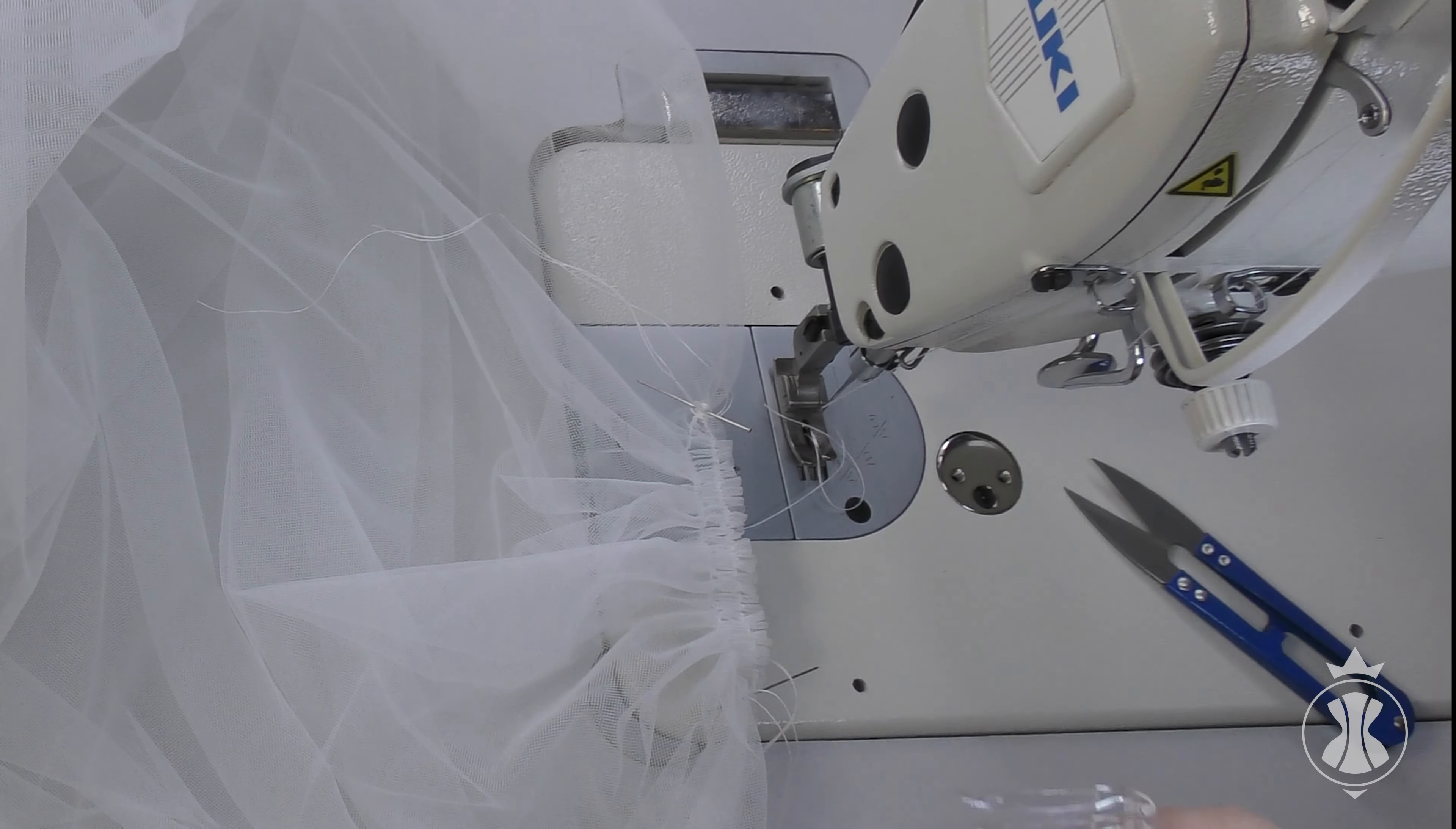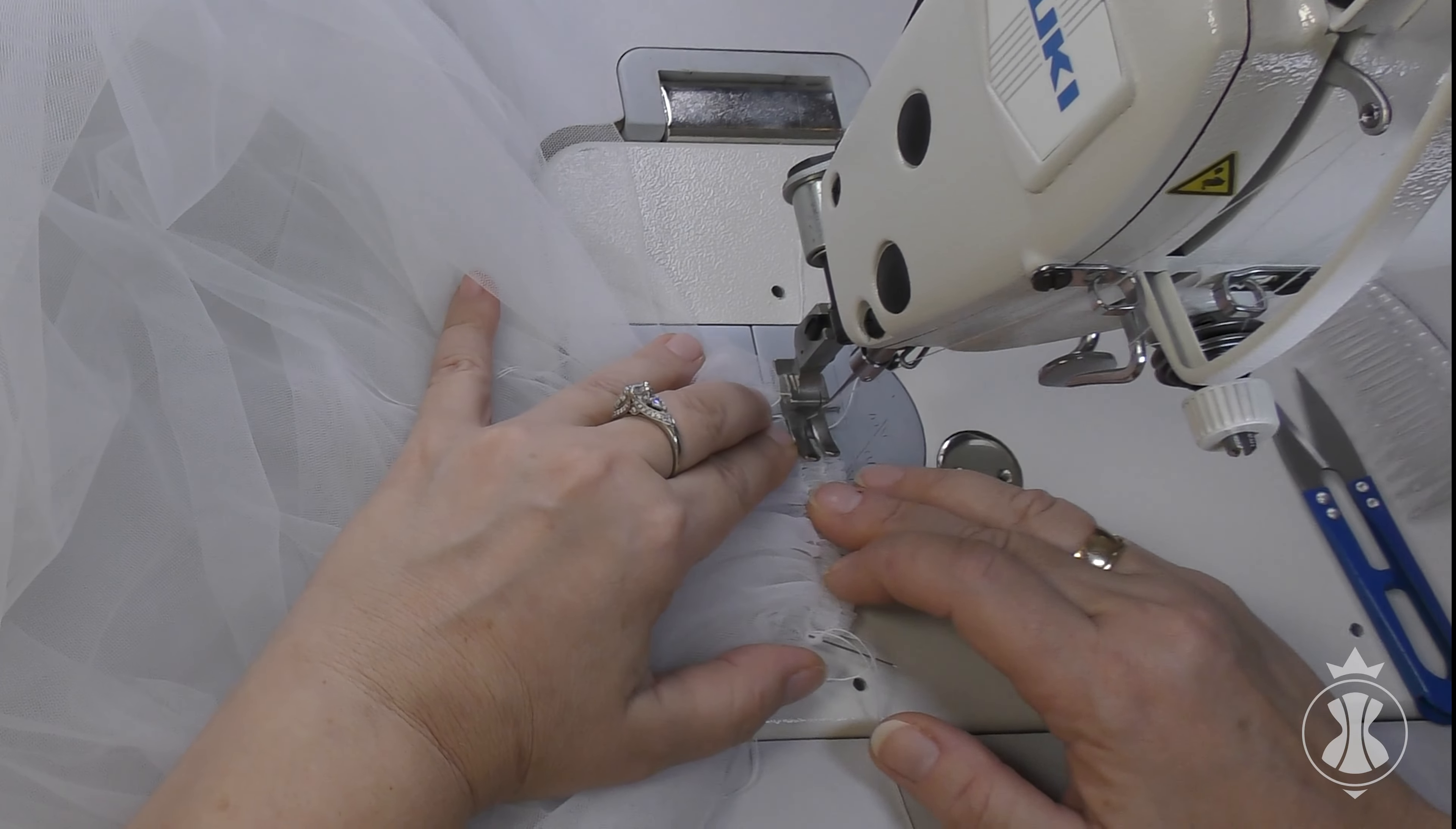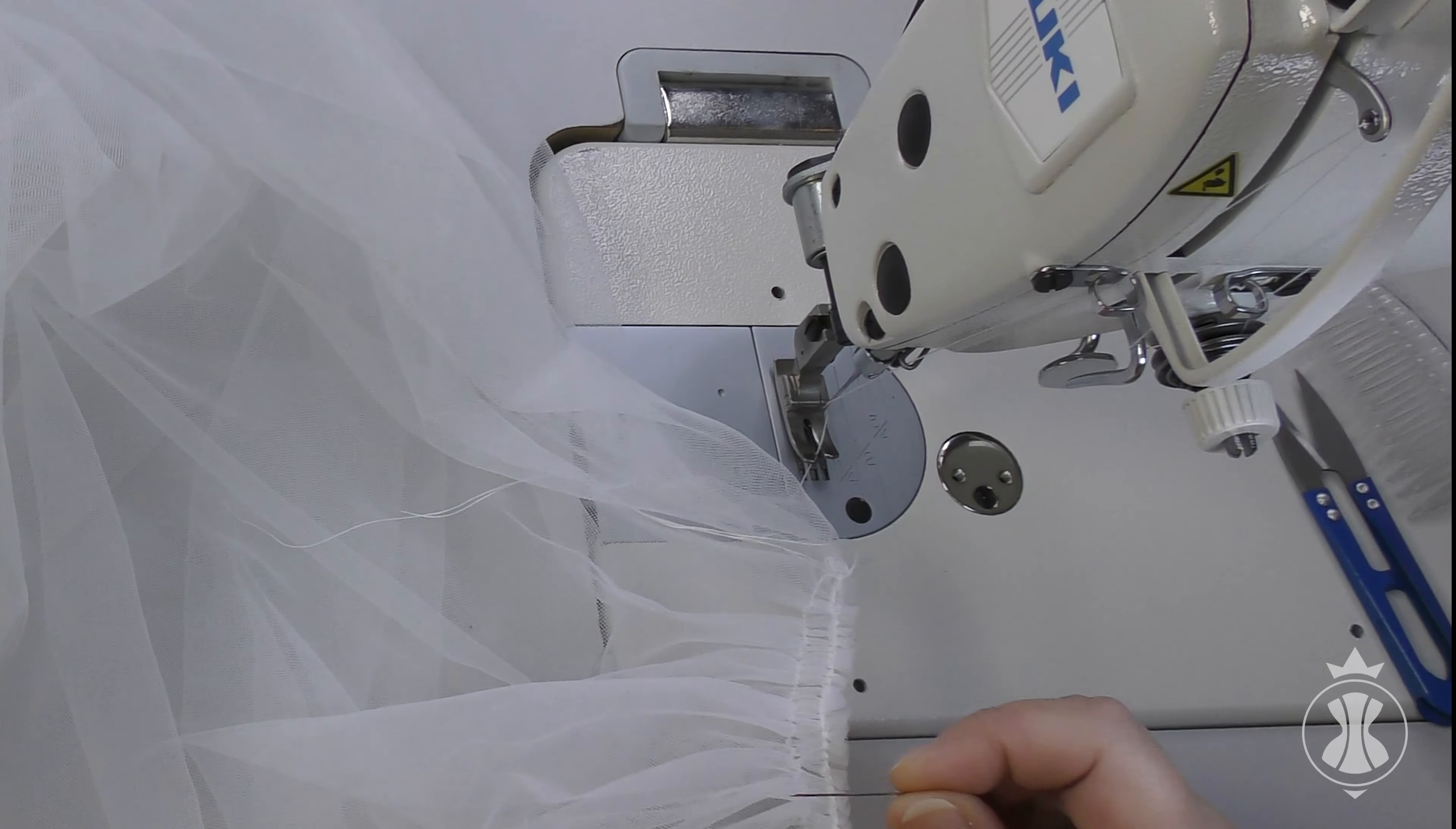Check once again if the length of the gathering matches the comb or the attachment you will use. After this, reduce the machine step to 2.5 millimeters and sew a securing stitch to fix the gathering. Sew this stitch as close to the fabric fold as possible.